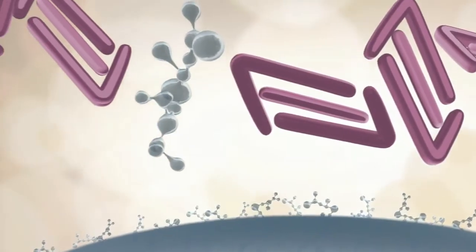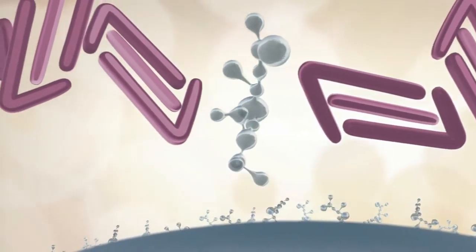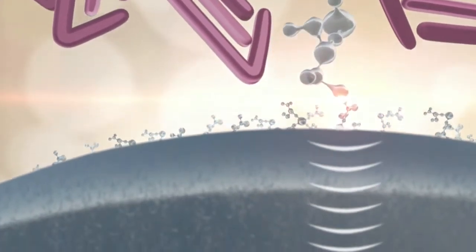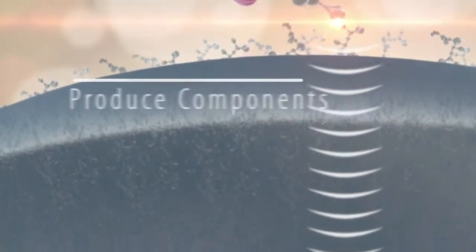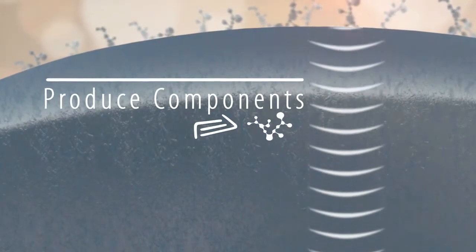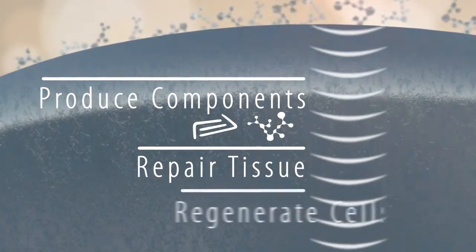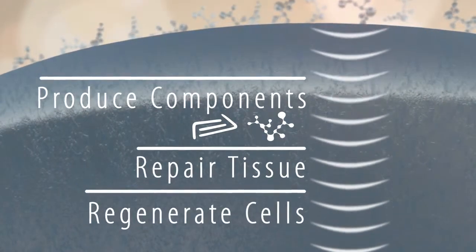Glycans also serve as biological keys that activate a chain reaction of signals between skin cells that are necessary for the production of these structural components, the repair of damaged tissue, and the ongoing regeneration of new, healthy cells.